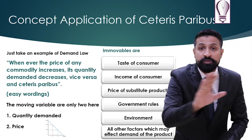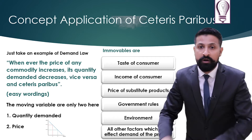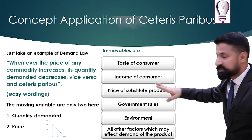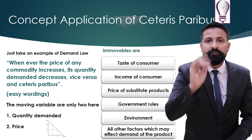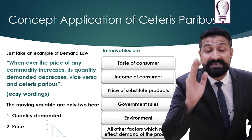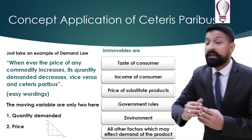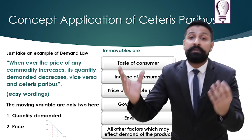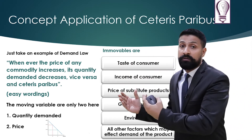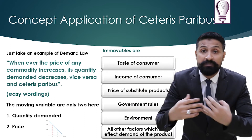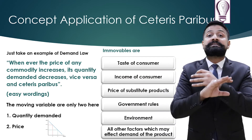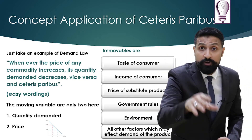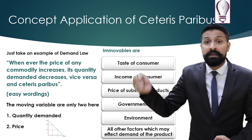The factors are: the taste of the customer is not changed; the income of the consumer is not changed; the price of the substitute good is not changed; government rules and regulations are not changed; the environment is the same; and any other variable which has a direct impact on the quantity demanded is not changed — they are all fixed.